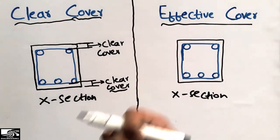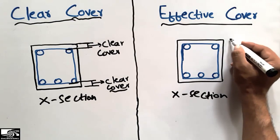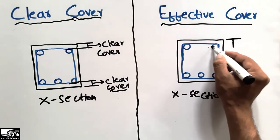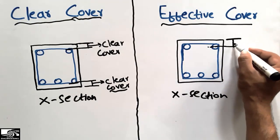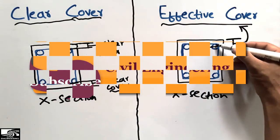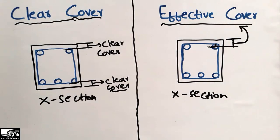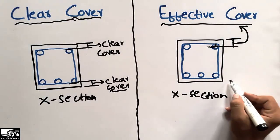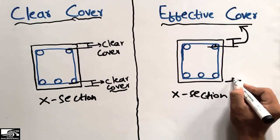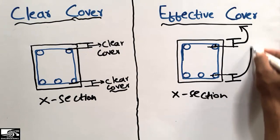The effective cover can be defined as the distance from the top of any beam section to the mid of the reinforcement. This distance is known as the effective cover. It includes the extra distance to the center of the reinforcement bar. Similarly, from the bottom, the effective cover is the distance from the extreme fiber of the beam to the middle of the reinforcement.